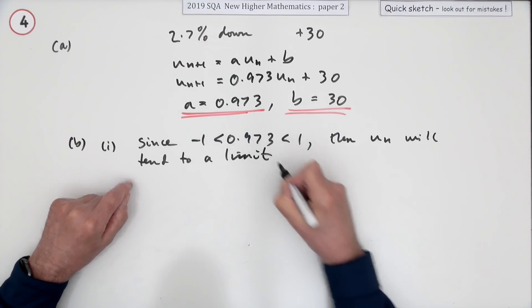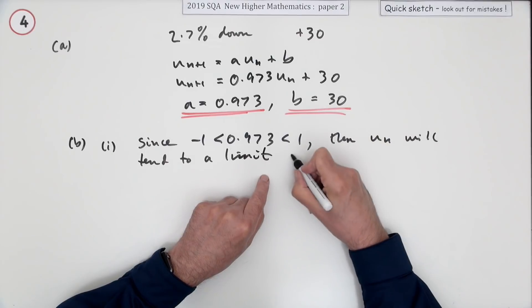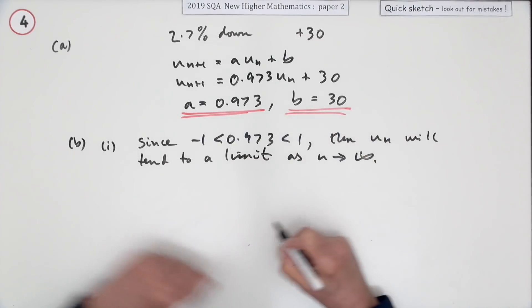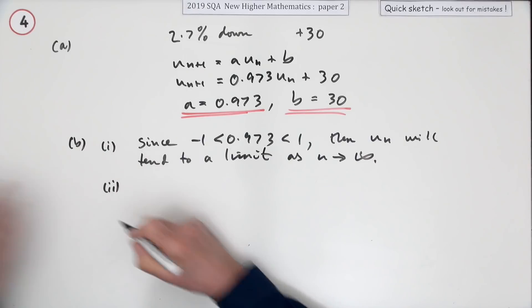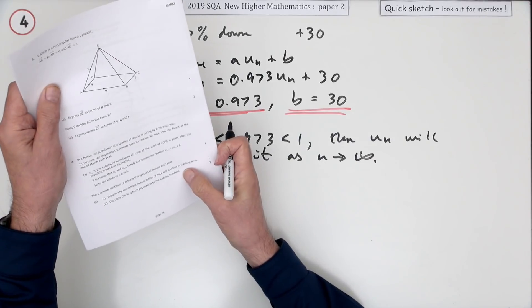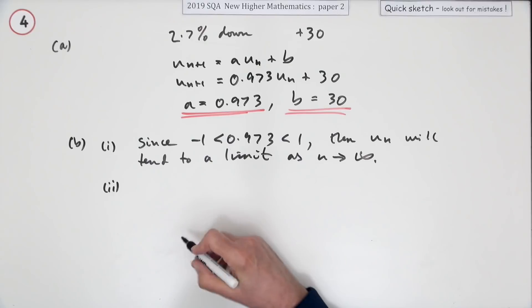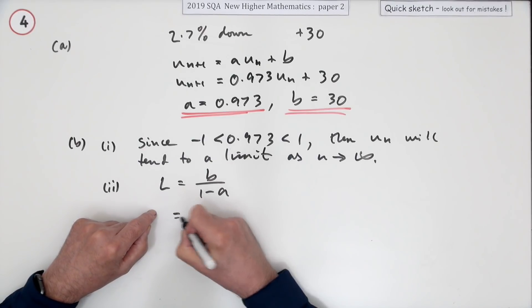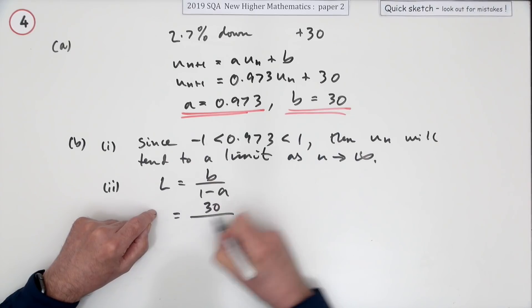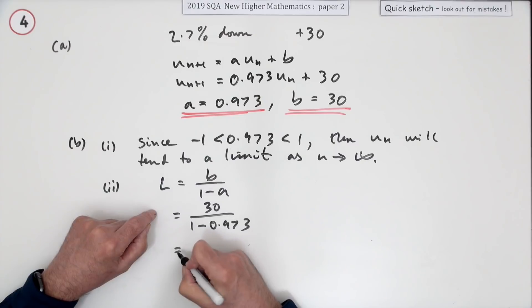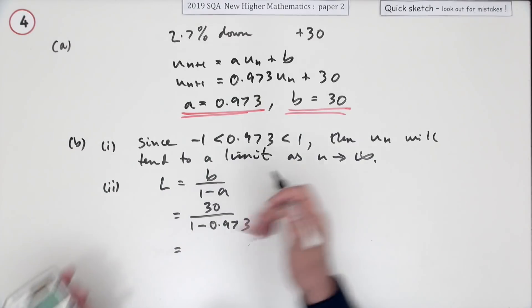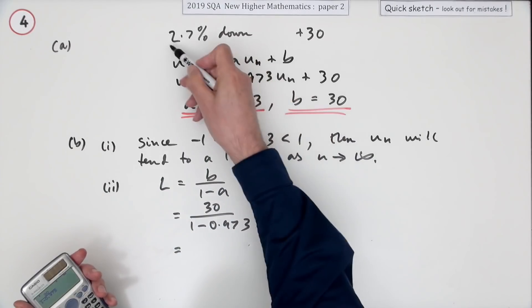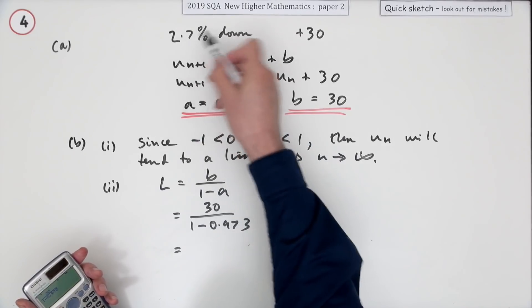And what's that limit? That's asking calculate the long-term population. The limit is B over 1 minus a. B was 30, a was 0.973. Obviously something's going to cancel with a 2, we just go back to that 27, and a 3 is going to cancel with the 9 underneath.